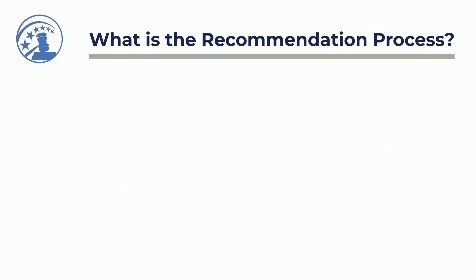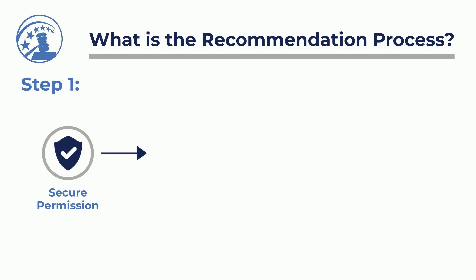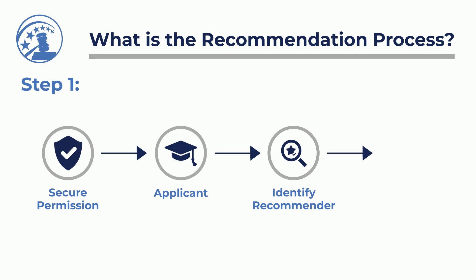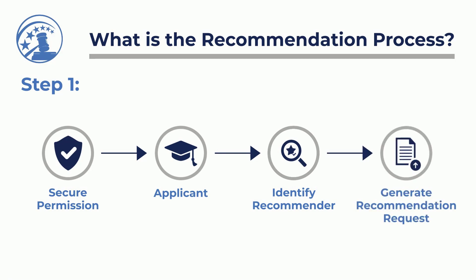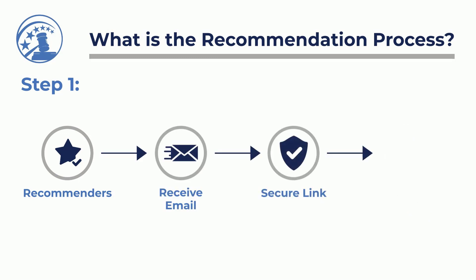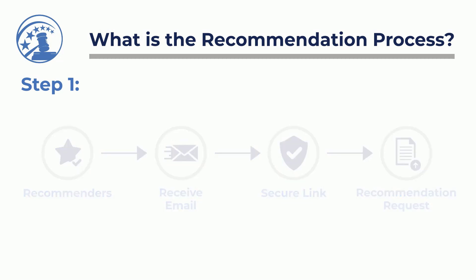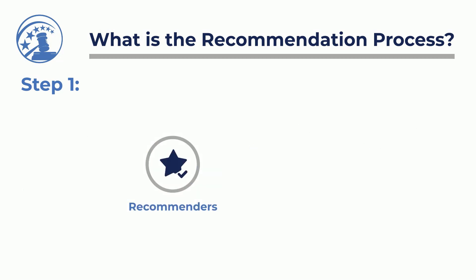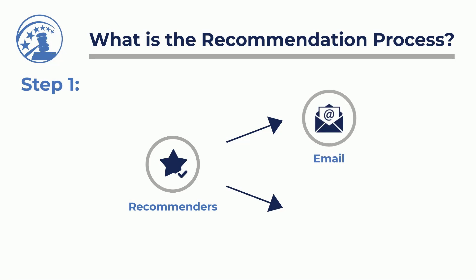Here are the four steps. Step 1: After getting permission from the recommender outside of OSCAR, an applicant identifies a recommender in OSCAR and generates a recommendation request. Recommenders receive an email with a secure link that can be used to fill the recommendation request. Recommenders can choose to receive notifications of new and pending recommendation requests by email and on the dashboard of their OSCAR accounts.